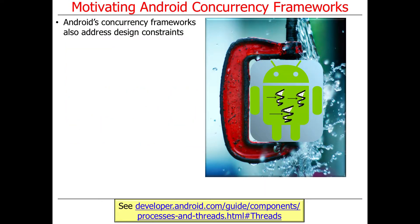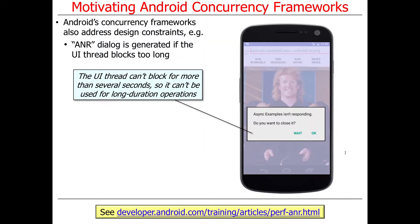It turns out that there are a number of design constraints baked into Android that concurrency frameworks are designed to address. We've talked about these a little bit before, but I'm going to go a little deeper now. One of the design constraints is that the user interface thread cannot block for more than a short time, like a couple of seconds.